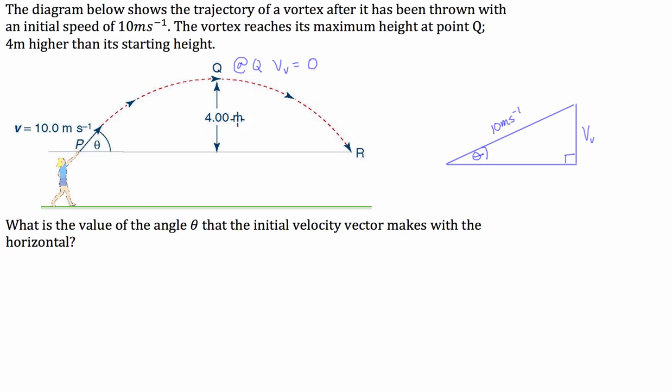What we can do is make use of the formula v squared is equal to u squared plus 2 a s. Now, v squared is our final velocity, which is going to be equal to 0, plus 2 times negative 9.81 times the distance, which is 4.